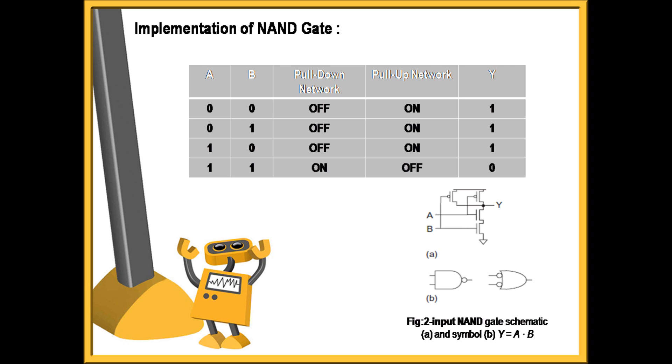For input A equals 0 and B equals 1, the pull-down network is off and pull-up network is on, so the output Y equals 1 is achieved. For input A equals 1 and B equals 0, pull-down network is again off and the pull-up network is on, therefore output Y equals 1. For inputs A and B equal to 1, the pull-down network will be on and the pull-up network will be off. That is why the output will be fetched to ground value, which is 0. Hence, by using CMOS technology, the implementation of NAND gate becomes easy and the power dissipation gets reduced.